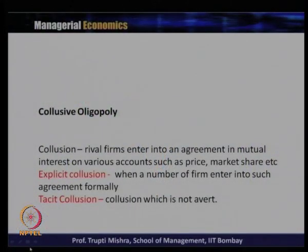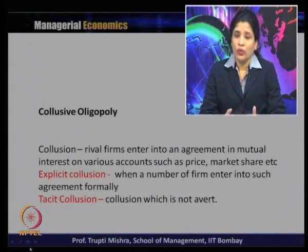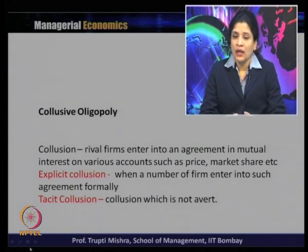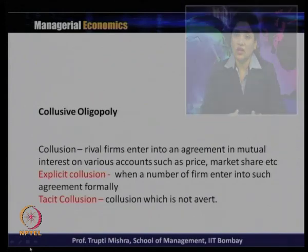Before getting into the model, let us understand what collusion means. Collusion occurs when rival firms enter into an agreement in mutual interest on various accounts such as price and market share. In simple language, it is an agreement where all the firms come together and jointly decide on the price to follow and the market share. Two kinds of collusion may happen: explicit collusion, where firms enter into such an agreement formally, and tacit collusion, where firms are in collusion but not formally.